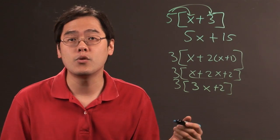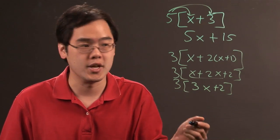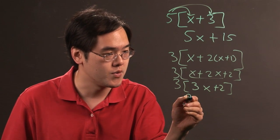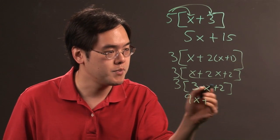And then, like I said before, you would treat the brackets as you would parentheses by distributing. So 3 times 3x is going to give you 9x, and 3 times 2 is going to give you 6.